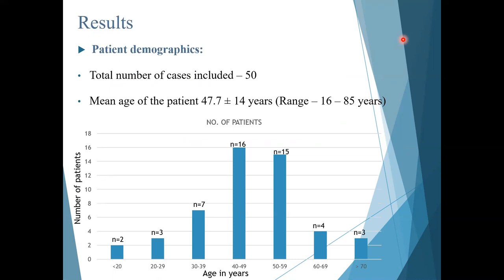The mean age of all patients was 47.7 ± 14 years, where the youngest patient was 16 years and the oldest was 85 years of age. Most patients — 16 patients — were between 40 to 49 years, followed by 15 patients between 50 to 59 years, suggesting that breast lesions are more common in the perimenopausal followed by postmenopausal age group.